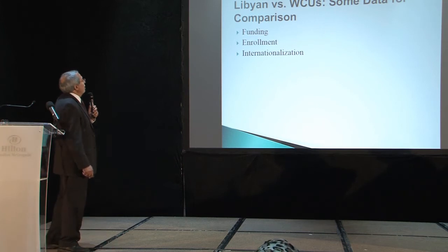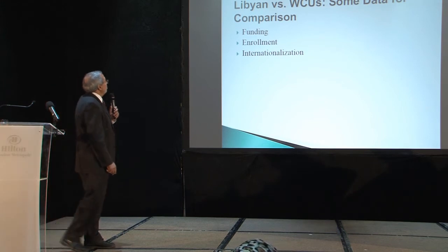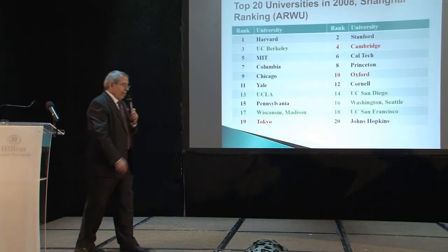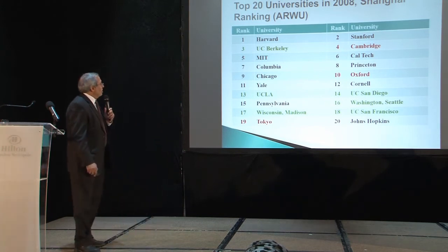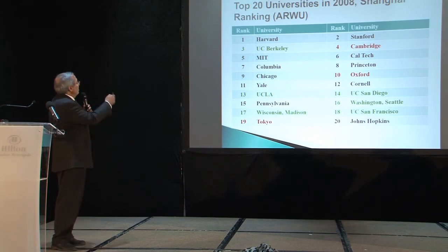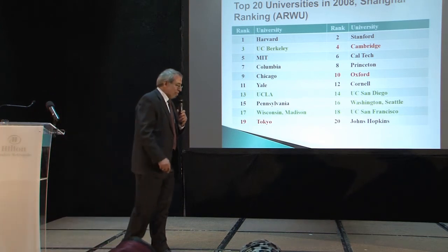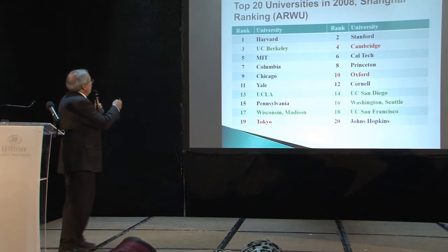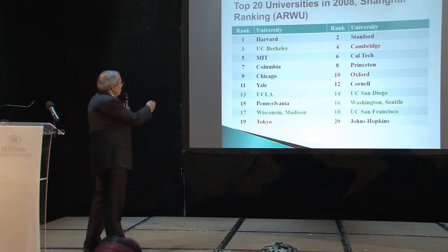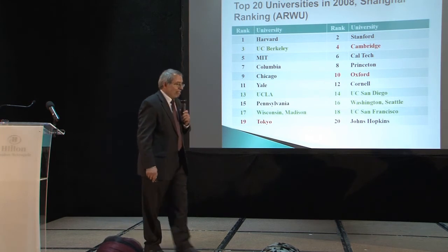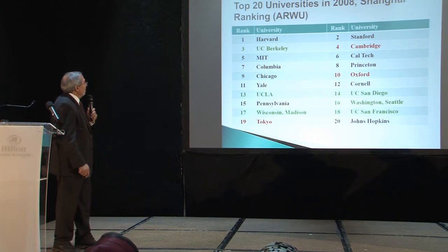For comparison of Libyan versus world-class universities, let's look at some data on funding and enrollment. These are the Shanghai rankings from 2008 — I picked the top 20 universities. The colors are meaningful: the black ones are private universities, all of them in the US; the green ones are US public universities; and the red ones are non-US universities. One feature common to all of them is that they have very large endowments — the highest is Harvard at about 30 billion dollars, and Rice is about 5 billion.